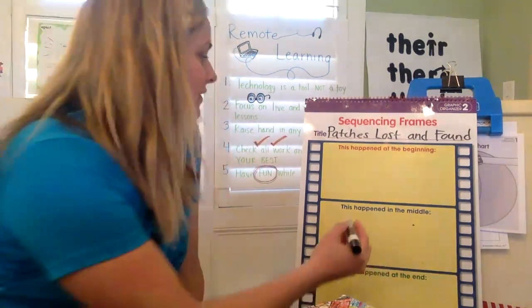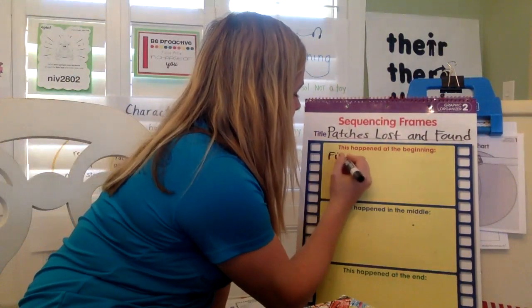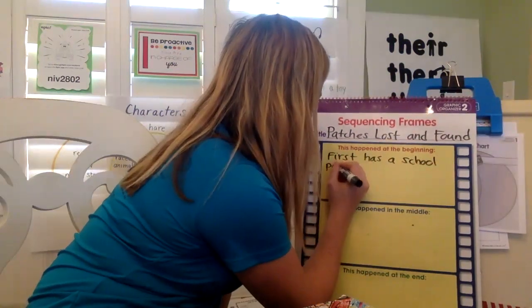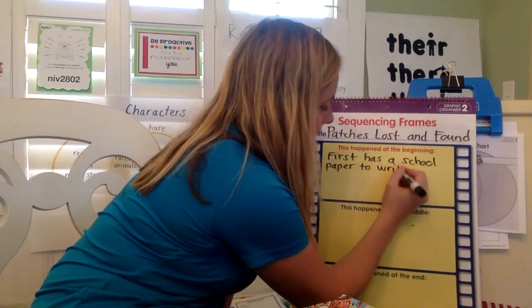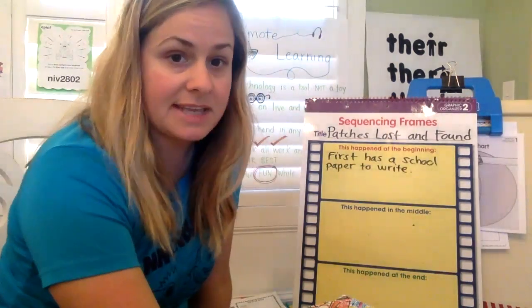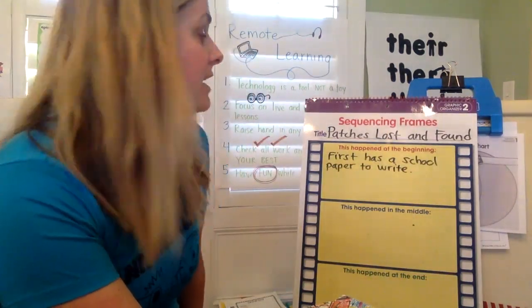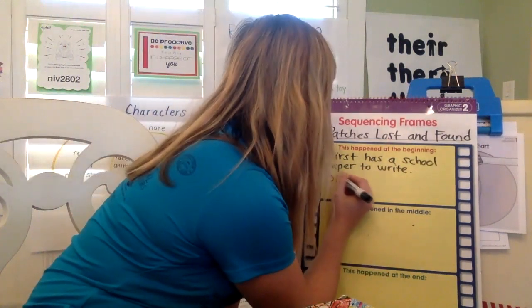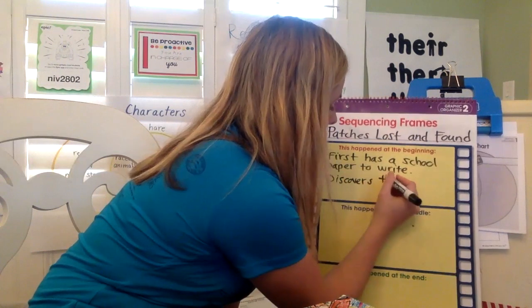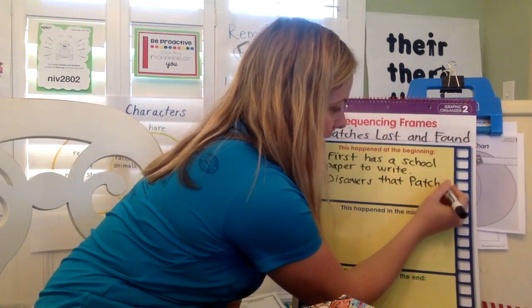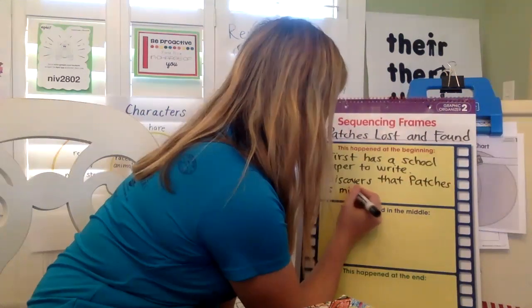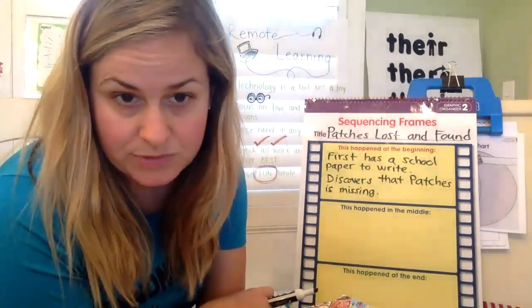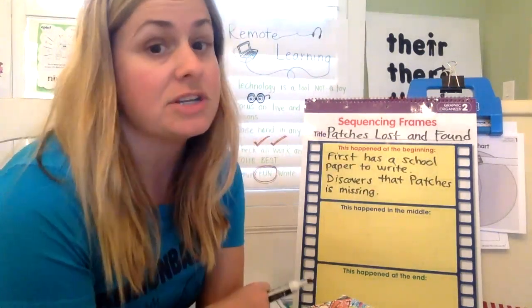Jenny has a hard time getting started with her story. She first has a school paper to write, and then her mom says, 'Jenny, today when I went to go feed Patches in his cage, he was missing.' So the first thing you could say is that she has a paper to write and then she discovers that Patches, her pet guinea pig, is missing. What happens next in the story is that she makes posters to help find Patches and she looks all over for him.